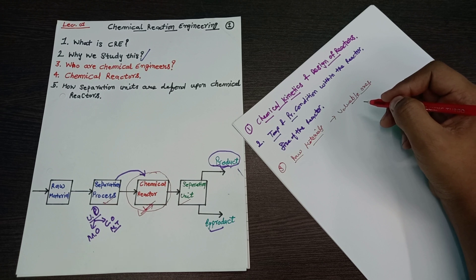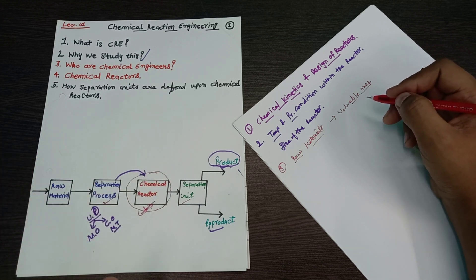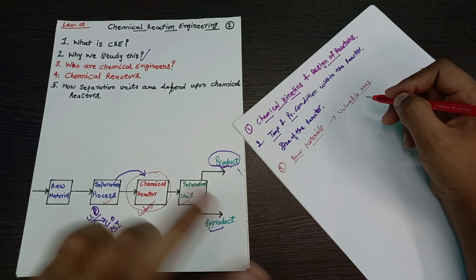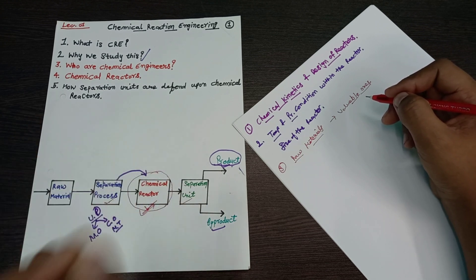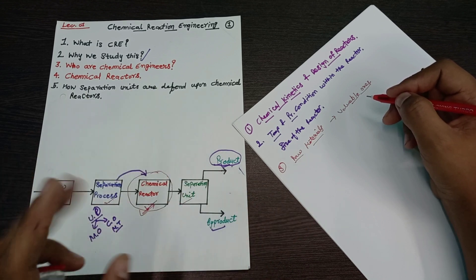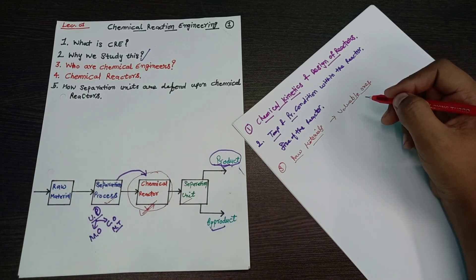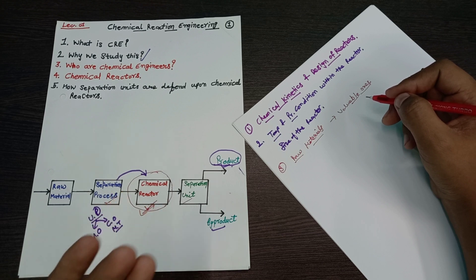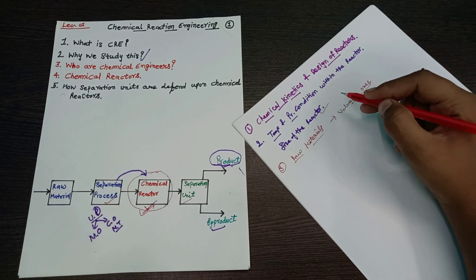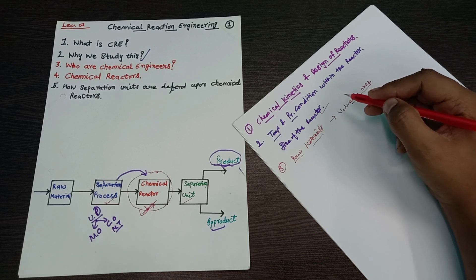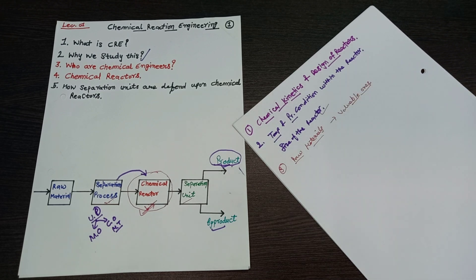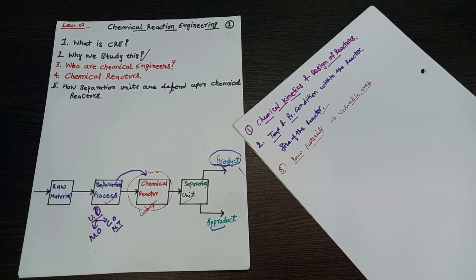With respect to chemical reaction engineering, we study and design a chemical reactor in specific portions — not the entire reactor. We design the size of the reactor, the type of the reactor, and the temperature and pressure conditions within the reactor. This work is what a chemical engineer does, and by doing this the whole process becomes more efficient.